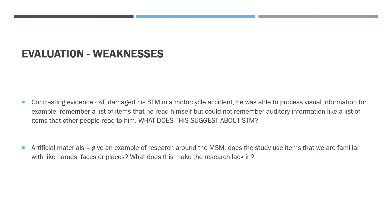For your weaknesses: we use KF a lot — try and remember KF, but it's still a case study. We've got contrasting evidence: KF damaged his short-term memory in a motorcycle accident, but he was able to process visual information — for example, if he read a list himself — but he couldn't remember it if it was auditory, so if someone else read the list to him. That suggests there are different types of short-term memory, because he can remember things he read himself but not things read to him. Atkinson and Shiffrin say short-term memory is one unitary store, so that's a negative as it's quite simplistic. Then you've got artificial materials: does any research around the multi-store model use items you'd usually use in everyday life, like names, faces, or places? You can link to the fact these are usually lab studies and discuss ecological validity or mundane realism.